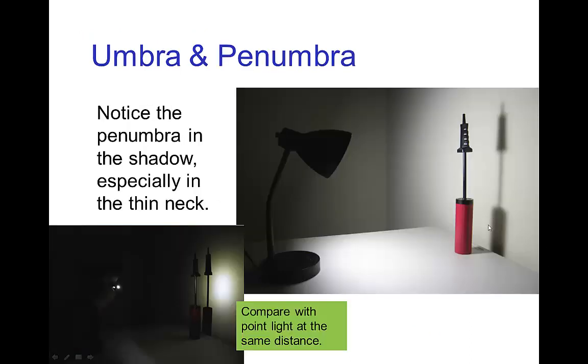And here's an example of a light bulb with a larger size than the small tiny light bulb which cast a sharp shadow. This one has a fuzzy shadow because of the penumbra. It's particularly noticeable in the thin neck of this object in that shadow.